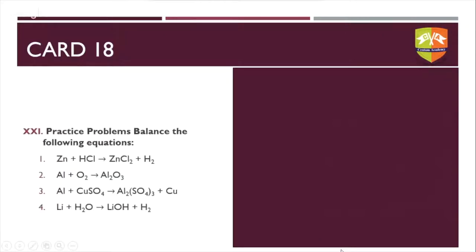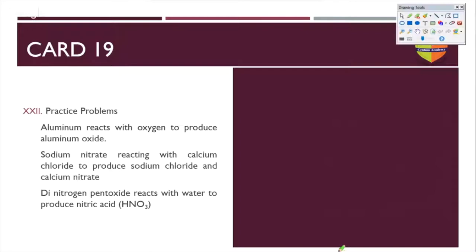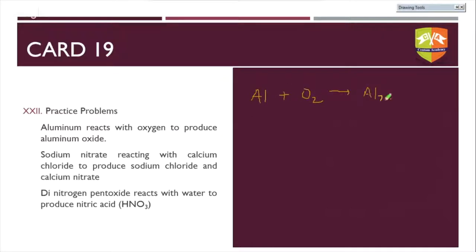More practice: aluminium reacts with oxygen to produce aluminium oxide. Write Al + O₂ → Al₂O₃. We have already balanced this: 4Al + 3O₂ → 2Al₂O₃. There are six oxygens on each side and four aluminium on each side — this works.